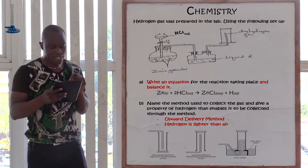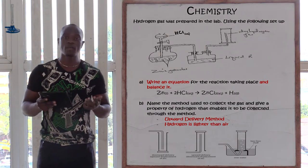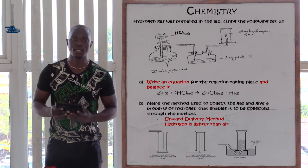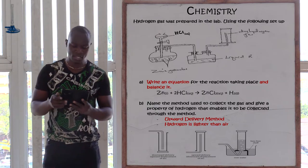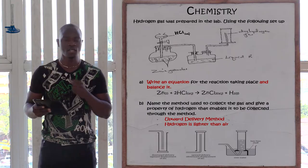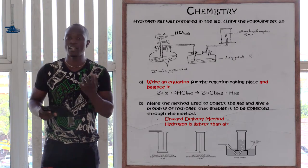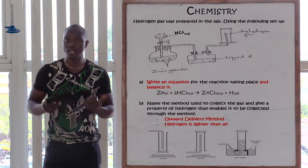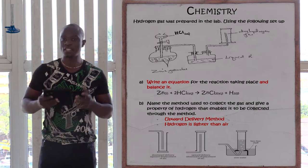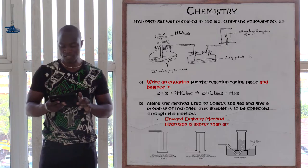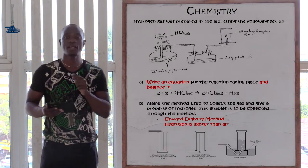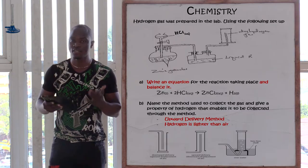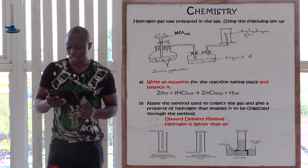The first question is: write an equation for the reaction taking place and balance it. Hydrochloric acid is reacting with zinc granules. In this case, an acid is reacting with the metal. If an acid reacts with a metal, we get salt plus hydrogen gas. If acid was reacting with a base, we get salt and water only. If acid reacts with a metal carbonate, we get salt plus water plus carbon dioxide. In our case, hydrochloric acid reacting with zinc metal gives us zinc chloride as the salt and hydrogen gas.